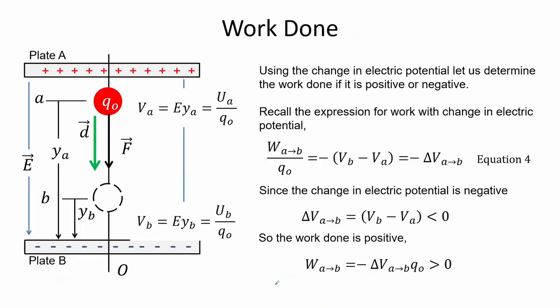Using the change in electric potential, let us determine whether the work done in moving the charge will be positive or negative. Recall the expression for work as a function of the change in electric potential, equation 4. Since the change in electric potential is negative — it is decreasing — the work done will be positive.